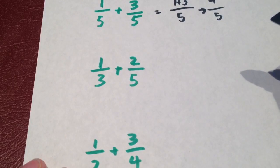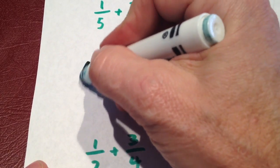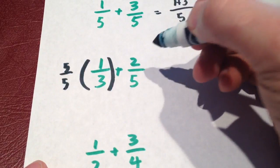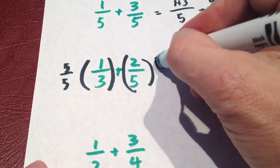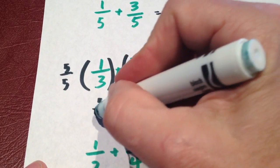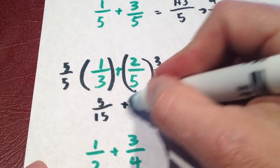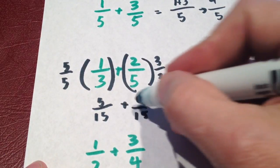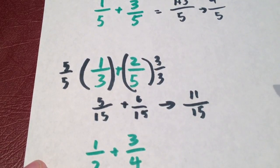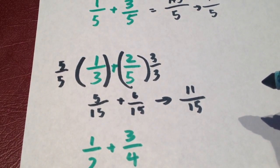For one-third and two-fifths, we need to find a common denominator. The work looks like this: I want these to stay the same, so I can only multiply by one. Five over five is a version of one, and three over three is a version of one. So one-third times five-over-five becomes five-fifteenths, and two-fifths times three-over-three becomes six-fifteenths. Now I add those: five-fifteenths plus six-fifteenths gives eleven-fifteenths. With a common denominator, you add the numerators and the denominator stays the same.